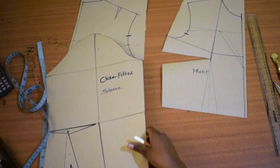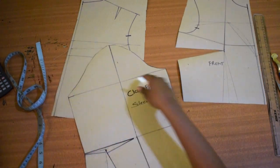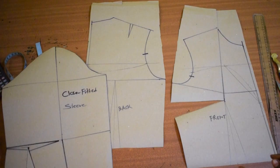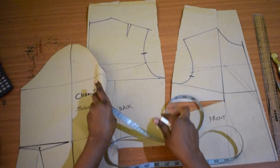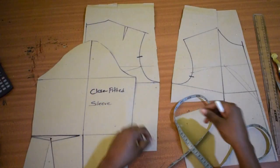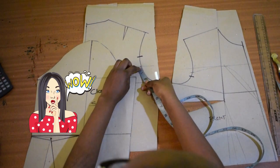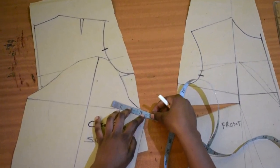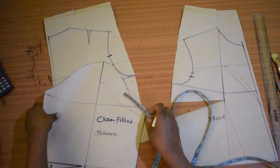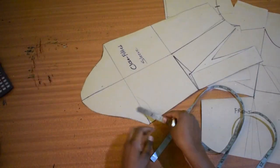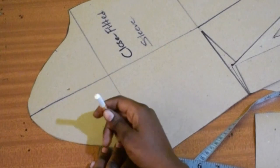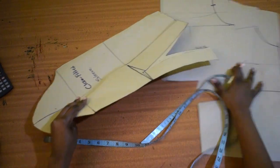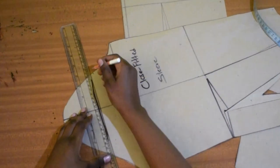So what you want to do is, because the sleeve is also not full, measure again from the armhole, this part, with my tape measure. And then measure the same from the sleeve. We found it was 3 and a quarter and something. So mark that one. Mark that part. So that's where the sleeve is reached. Take a ruler and do a straight line.